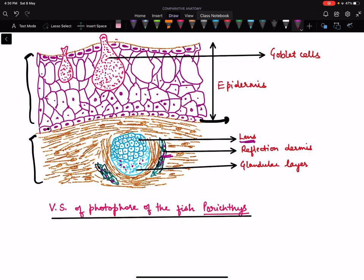This photophore produces light - the glandular layer produces light - and this light is reflected up by the lens. This lens is just below the skin. Even the reflective dermis helps to transmit light.